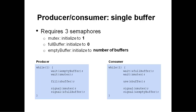Looking at the consumer code, it is very similar to the producer code. It starts by waiting for there to be a full buffer, ensuring there is some data to be consumed. It then waits on the mutex to get access to the shared data structure, gets a buffer and uses it, then signals the mutex to release mutual exclusion on the shared data structure. Finally, it signals empty buffer to indicate that a buffer is now available because it was just emptied. If run, the producer may run for a while, creating full buffers and reducing the number of empty buffers; when the consumer runs, it reduces the number of full buffers and increases the number of empty buffers as it uses them.